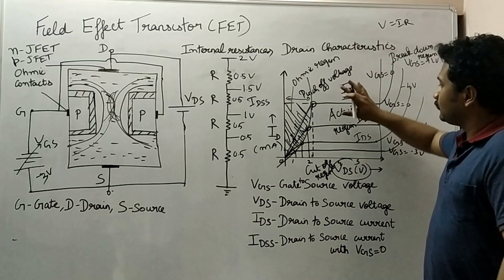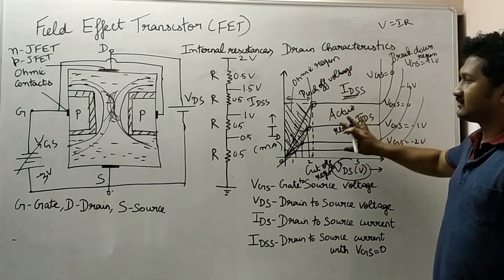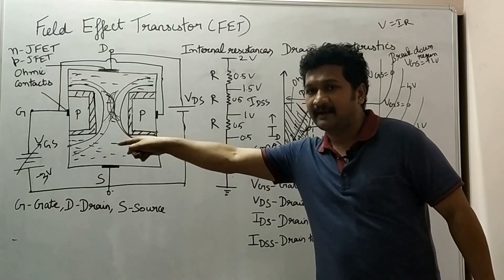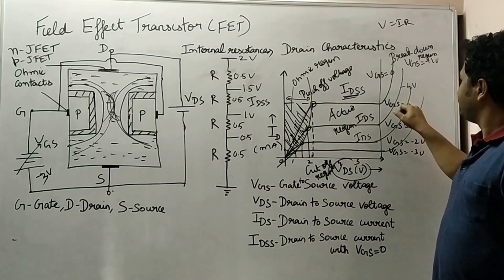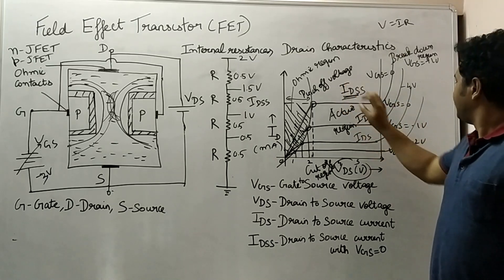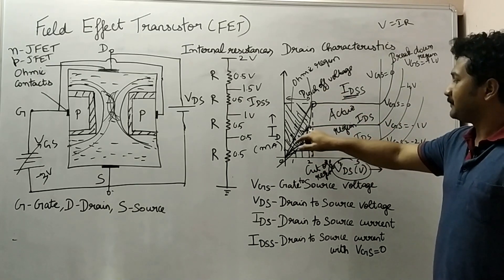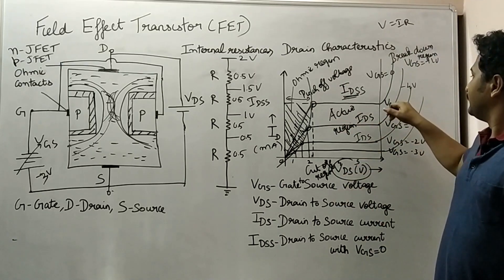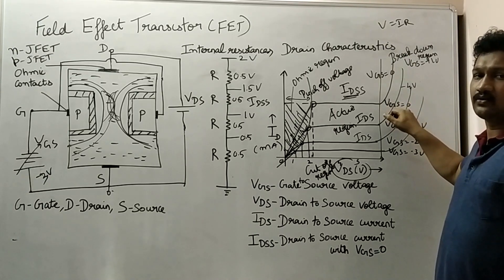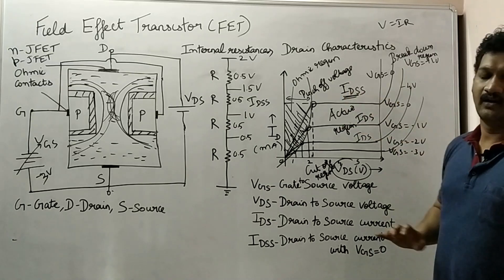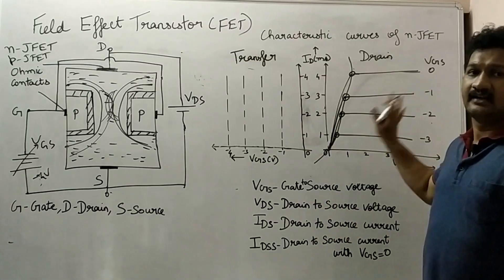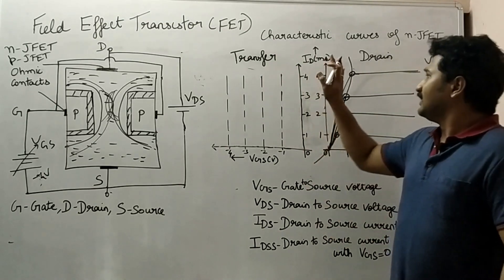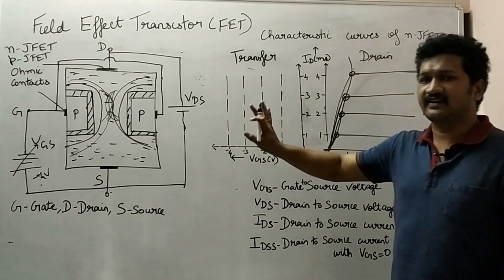Our area of interest should be only in the active region where drain-to-source current becomes constant. FET is a voltage-controlled device — gate-to-source voltage is the controlling parameter by which we obtain the drain current. When VGS is zero we obtain maximum drain current (IDSS). When VGS becomes negative, the pinch-off voltage changes, the current reduces and becomes constant at a lower level. So VGS is the controlling parameter and FET channelizes the current. Now we are going to see the transfer characteristics of JFET.